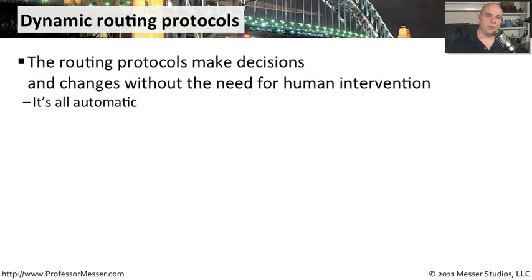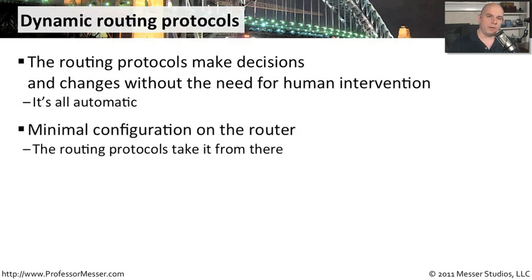In dynamic routing, all of your routing protocols make the decisions on their own. They don't ask you for anything. They don't wait for your input. You're not required to configure anything particular. It is completely hands off — no human intervention whatsoever, and it's all automatic. You don't have to do very much on the router. You simply tell the router to figure out where all the routes are by itself using its built-in routing protocols.